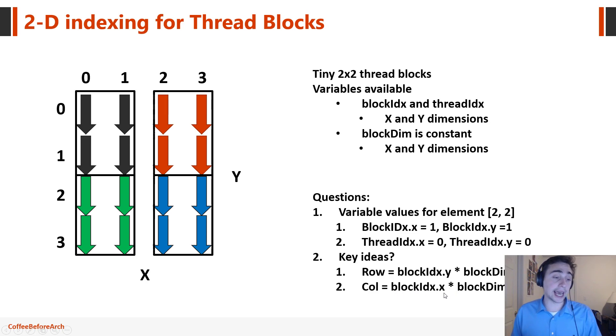So block idx dot x is going to be one. Remember we go over one. So this will be this block idx dot x. Then block dim dot x. The block dimensions in the x direction are two threads. So it'll be one times two here which is equal to two. And then our thread it will be this first thread over here in this column. So the thread idx dot x will be zero. So it'll be two plus zero again or two. So we get the result two, two.